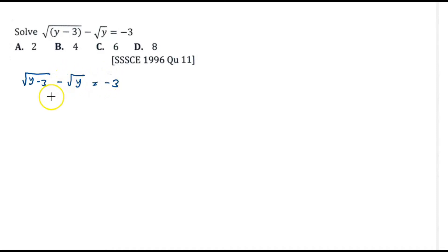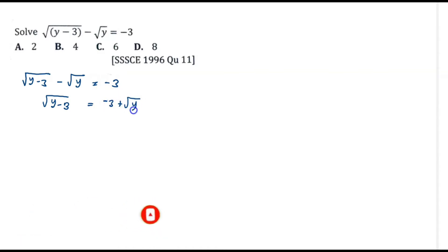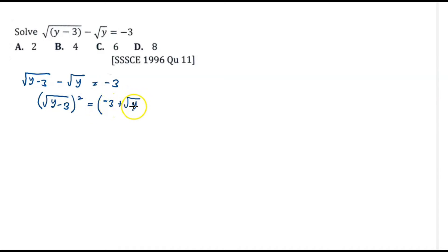Per this question, I would like to maintain square root of (y minus 3) on the left hand side of the equation, and then regroup the negative root y to join the negative 3, so I'll have negative 3 plus square root of y. At this moment, to get rid of the square root signs, I'll square both sides of the equation: square root of (y minus 3) all squared equals (negative 3 plus square root of y) all squared. Expanding the left side gives us y minus 3.